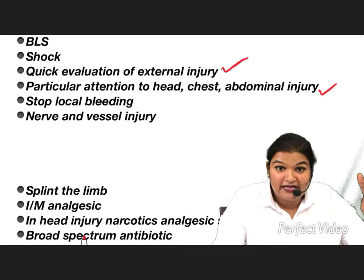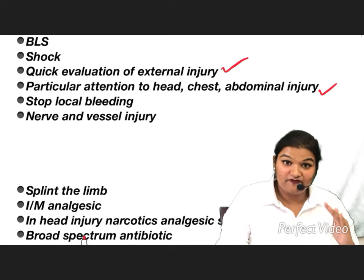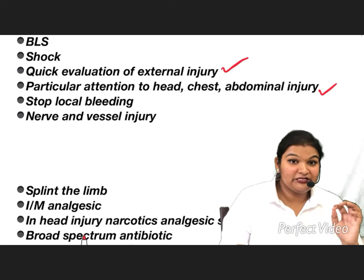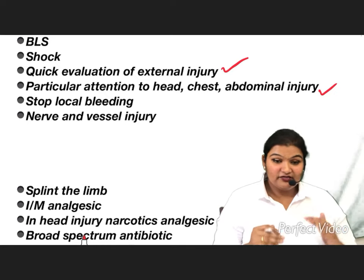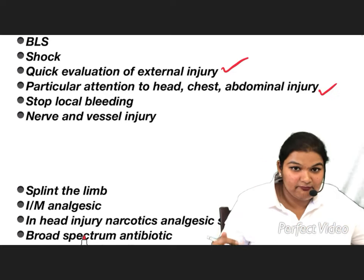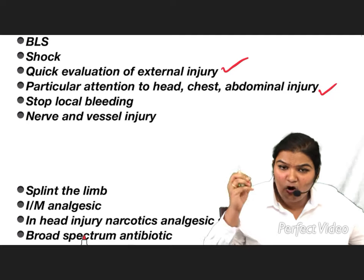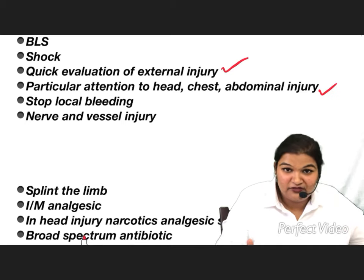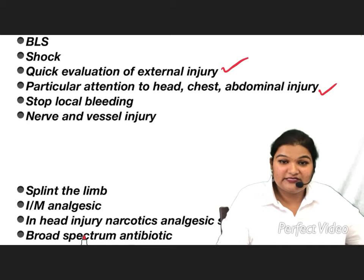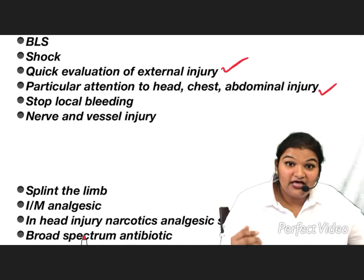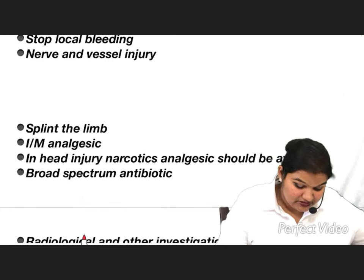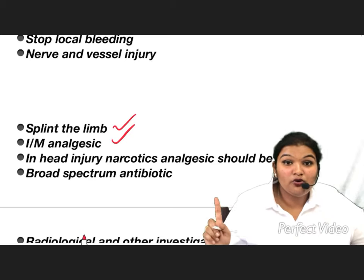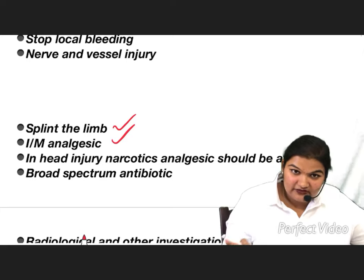Check for back injuries, stop local bleeding by compression, and assess for nerve and vessel injury. Note that all these steps happen simultaneously — one person checks vitals, another checks injuries, another starts fluid therapy. Once the patient is stabilized, give orthopedic care: apply splint and give IV analgesics. However, avoid narcotic analgesics if there is a head injury.